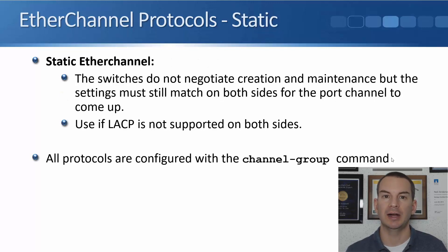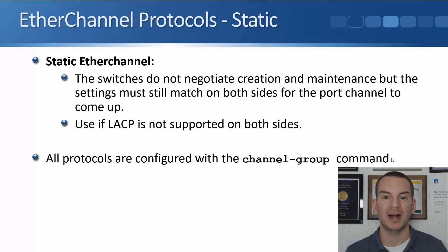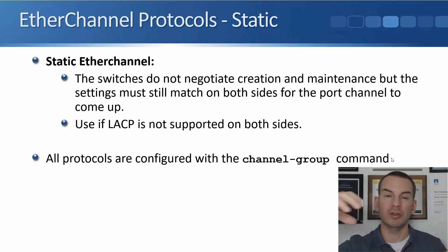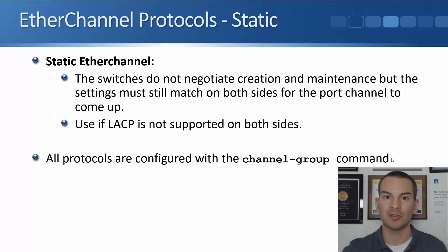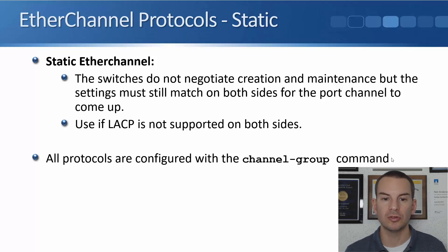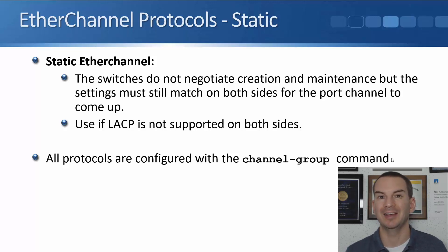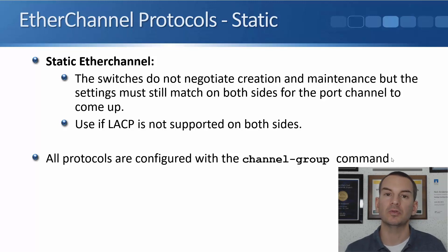The third option is to configure a static EtherChannel. With static, the switches do not negotiate creation and maintenance, but the settings must still match on both sides for the port channel to come up. Static is the option we'll use if LACP is not supported on both sides — for example, when connecting to another vendor switch or a server.